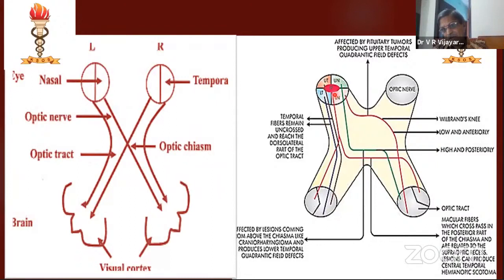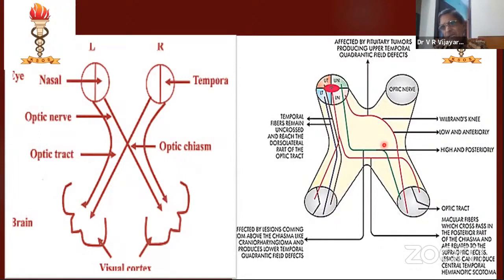At the level of the chiasma, the upper nasal and lower nasal fibers cross over. But the crossing is not simple — the lower nasal fibers after crossing enter the opposite optic nerve for about two millimeters, then come back. Similarly, upper nasal fibers dip into the opposite optic tract for some time. This is called the anterior genu or anterior limb of Wilbrand — a classical point you are supposed to know, as it helps explain certain field defects.